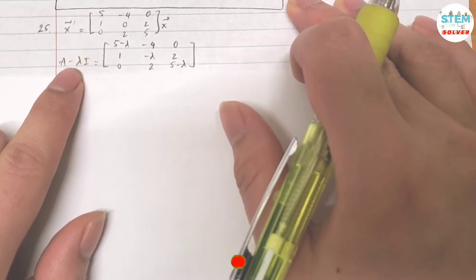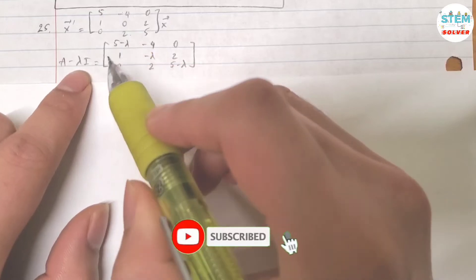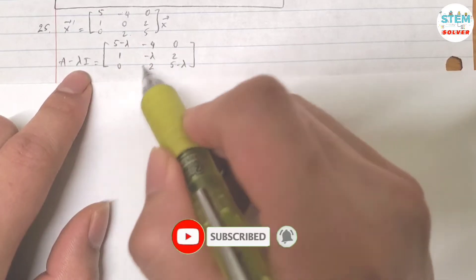So first, you need to find A minus lambda I. Let's call this matrix A, then subtract with lambda I, that gives you this matrix.